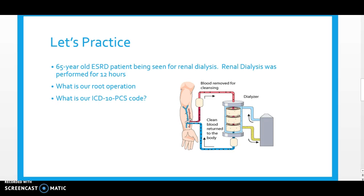Now I just wanted to take a couple minutes and practice going through some cases from the extracorporeal assistance, performance, and extracorporeal therapy section. Let's look at our first case: we have a 65-year-old patient with end-stage renal disease who is being admitted for renal dialysis. Renal dialysis was performed for 12 hours. The first thing you always ask yourself is: what is our root operation? From there we determine what is our ICD-10 PCS procedure code. Think about those root operations — which one would you use for dialysis?